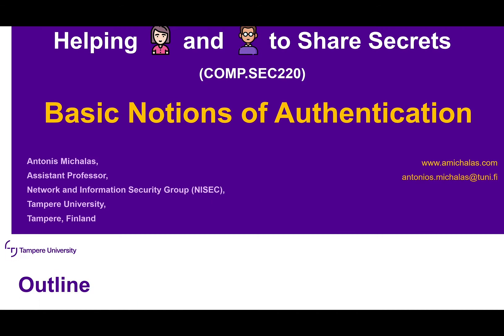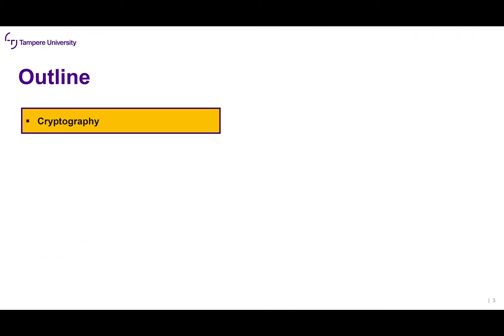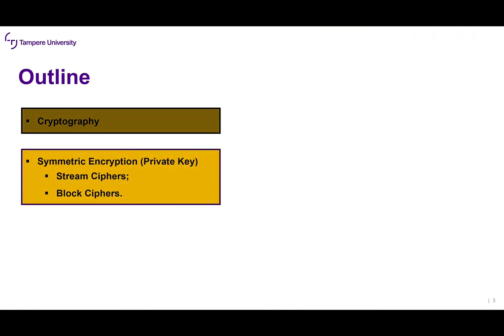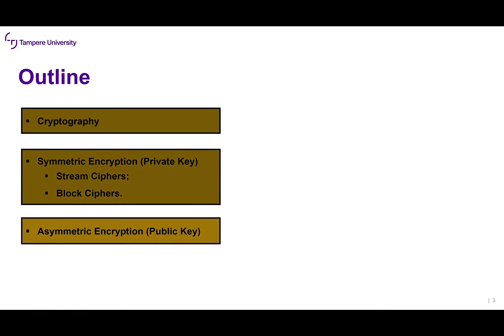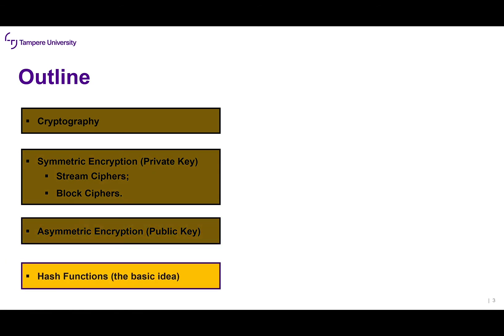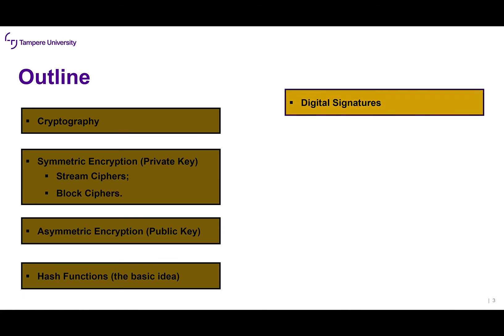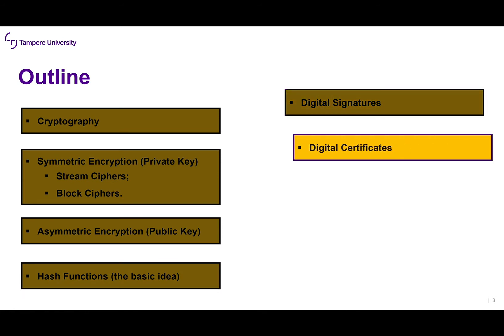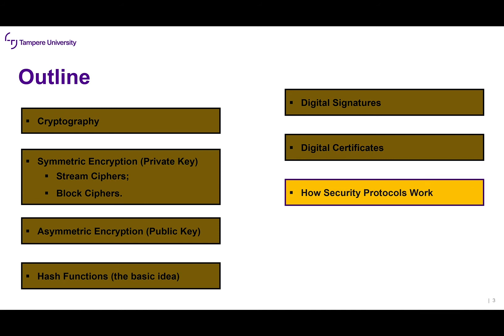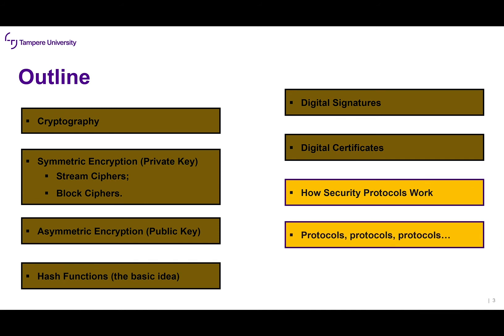So a brief outline: we have already talked about cryptography, about symmetric encryption, about asymmetric encryption. We gave the basic idea of cryptographic hash functions, and then we moved on to digital signatures and digital certificates. Now we are going to start describing how security protocols work.